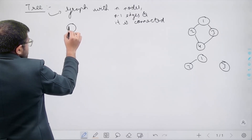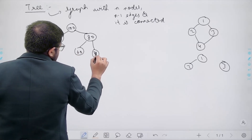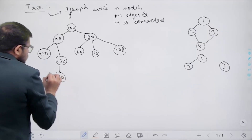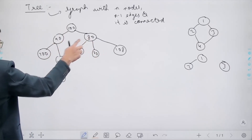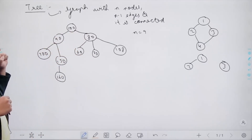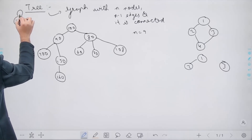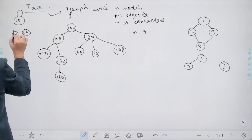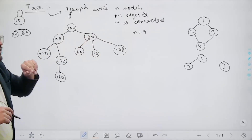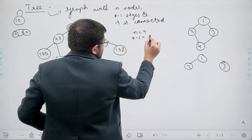Now let us understand some more things about a tree. Let me draw a tree. So this is a tree with 9 nodes, so n equals 9. This is a connected graph — there is a path between each and every pair of vertices. Also there must not be any self-loops or parallel edges. A self-loop is an edge from a node to itself, and parallel edges are multiple edges between two nodes. There are none here, so this is a tree. Cross-checking, there are n minus 1, that is 8 edges.